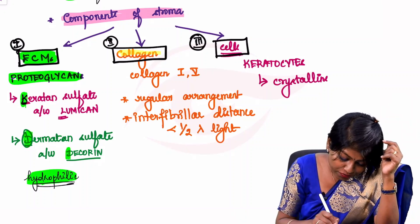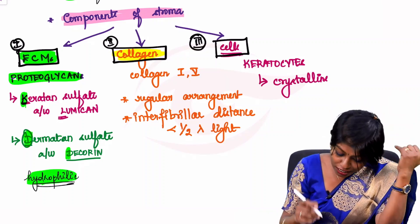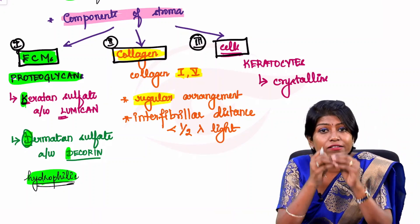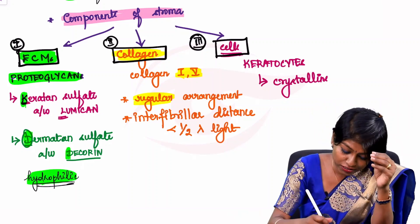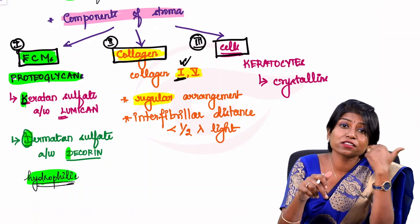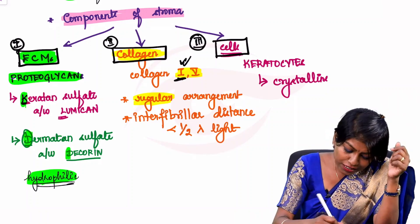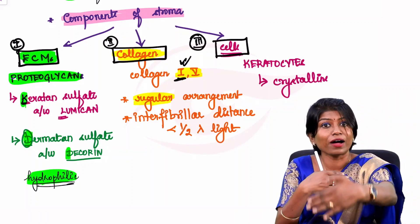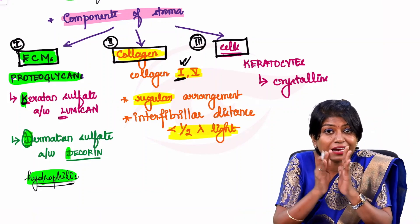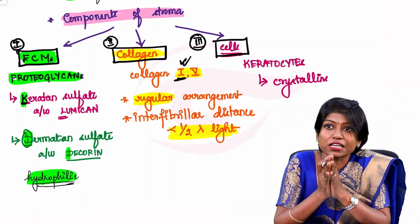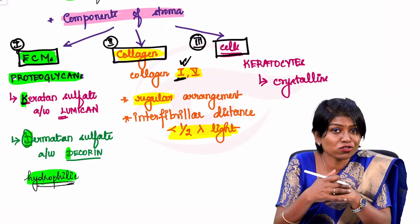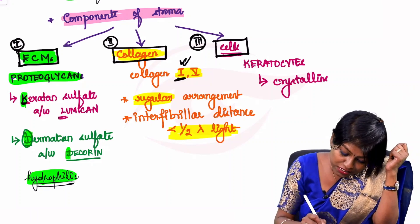The collagen types in stroma are collagen type I and type V, which are very regularly arranged — this is exactly why the cornea is transparent. Although collagen type I is the most abundant in both cornea stroma and sclera, the sclera is opaque because its collagen is irregularly arranged. The interfibrillar distance in stroma is maintained at less than half the wavelength of light, which is critical for corneal transparency. When the cornea becomes edematous, this spacing is disrupted, causing loss of transparency.